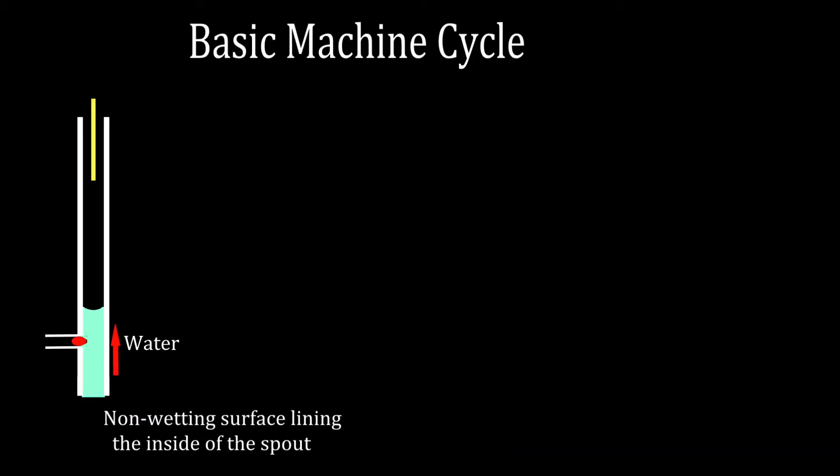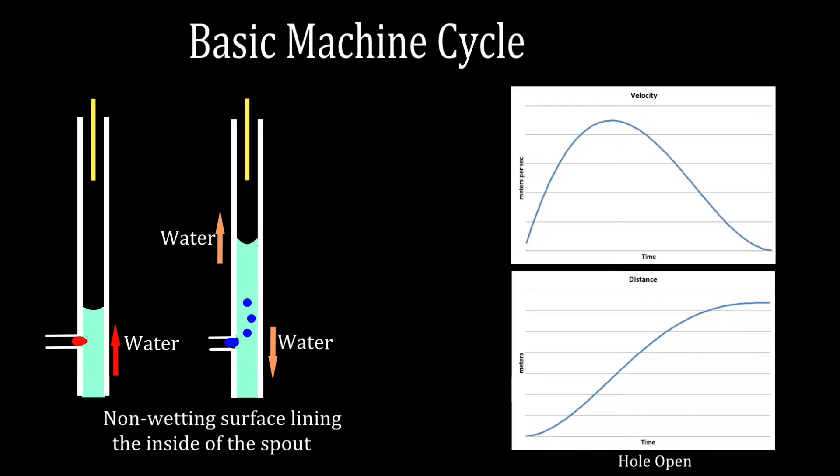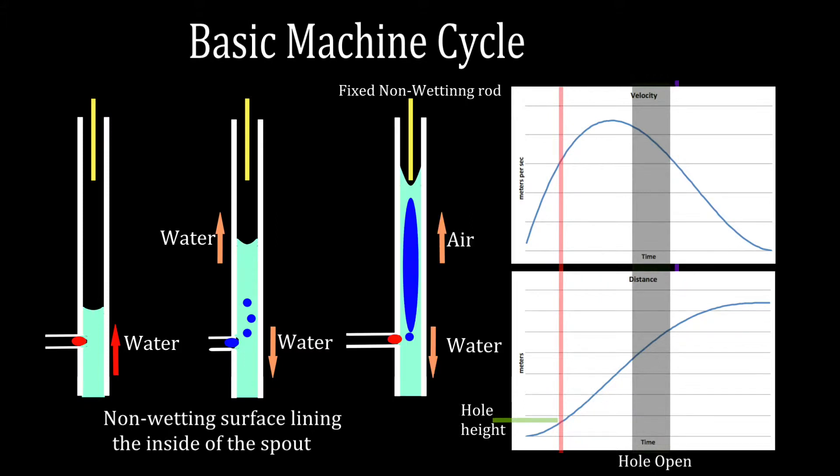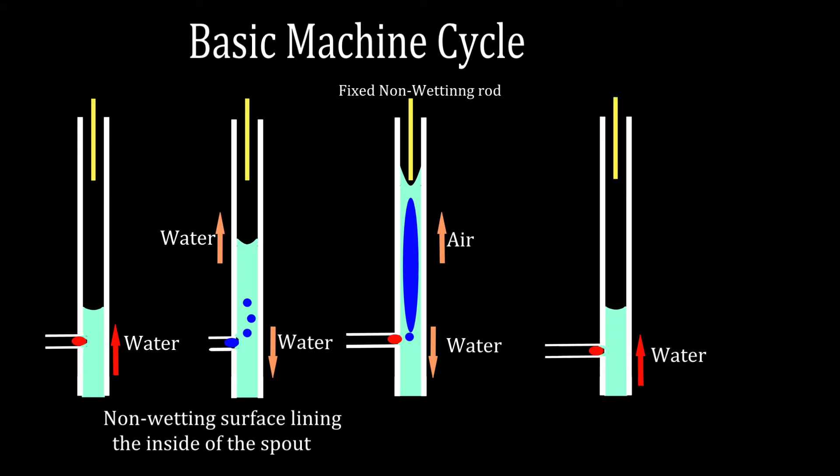The proposed machine cycle. Equipment required is a capillary with a non-wetting spout and a non-wetting fixed stopping rod. The cycle consists of the water going up, a non-wetting spout being opened at the right time, water proceeding up until the fixed non-wetting rod, meniscus stopping, the air continuing up, water falling down, returning to the original position.